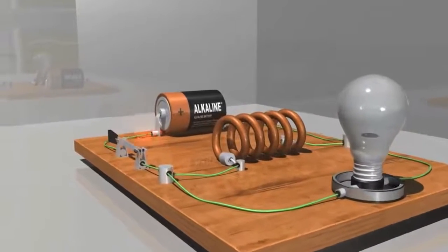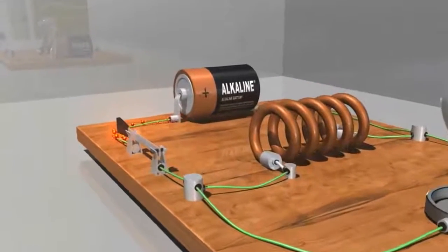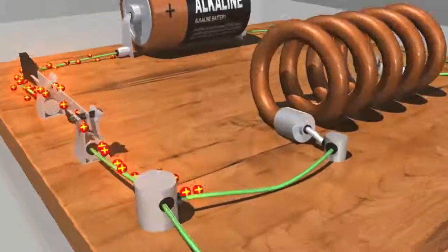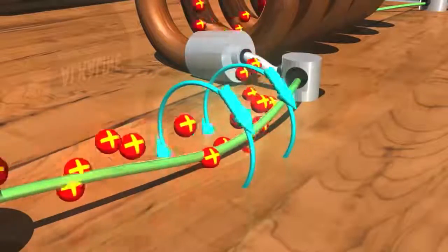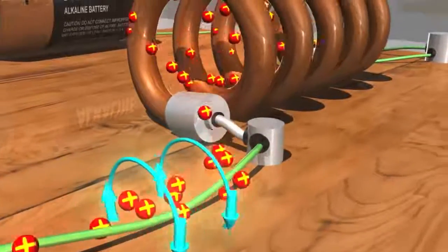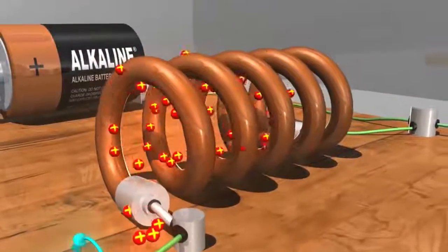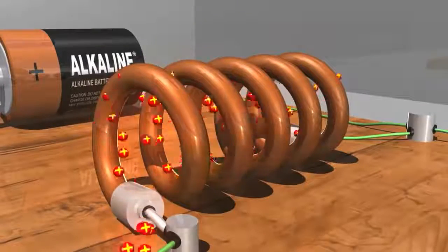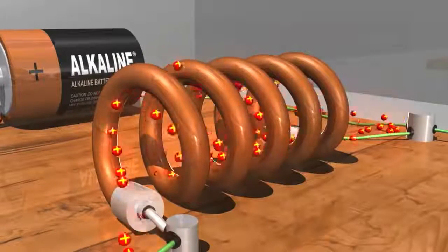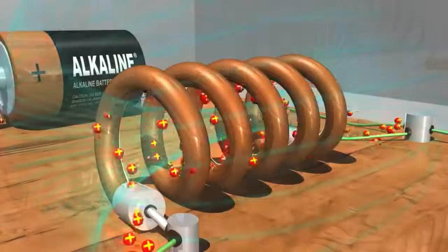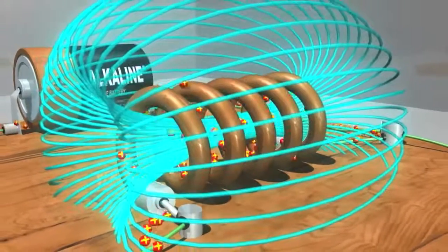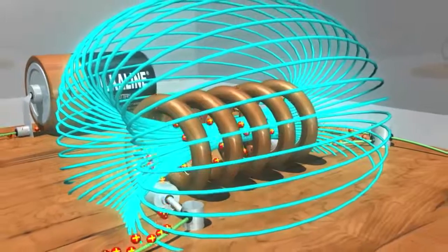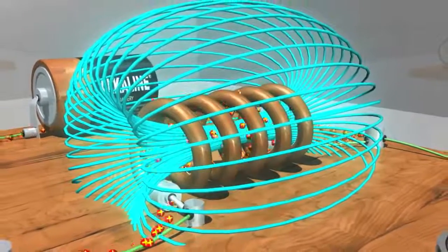When we power this circuit, the electrons in the current create a magnetic field around the wire as they move through it, as shown by these blue arrows. If the wire is formed into a coil, like this inductor, the magnetic field lines converge in the center. They gradually build up to a maximum magnetic field that is much stronger than the one around the straight length of the wire.